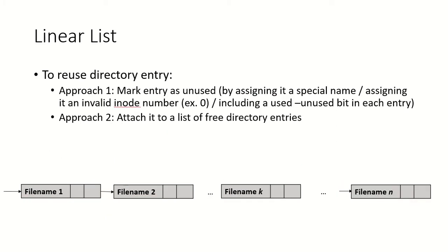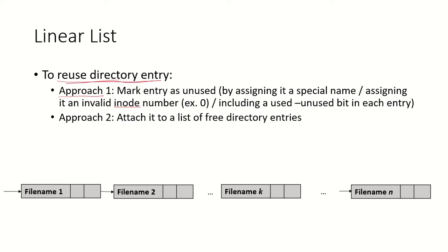If the space has been released for a deleted file and we want to reuse that directory entry, there are two approaches. Suppose file name K was deleted — that entry no longer has any information. Approach one is to mark this entry as unused by assigning it a special name or an invalid inode number.